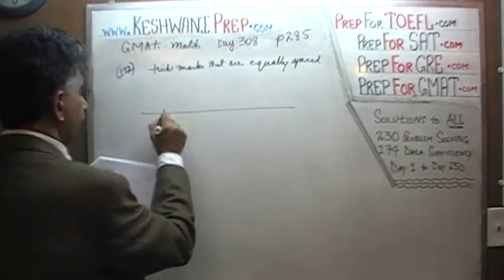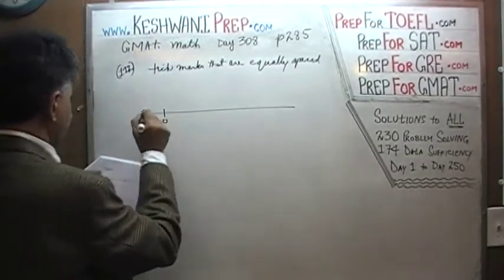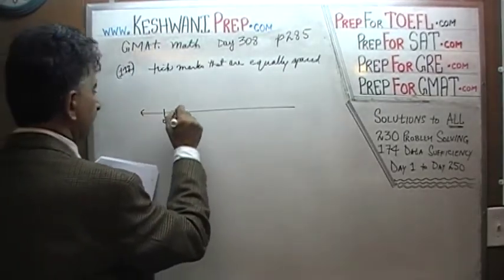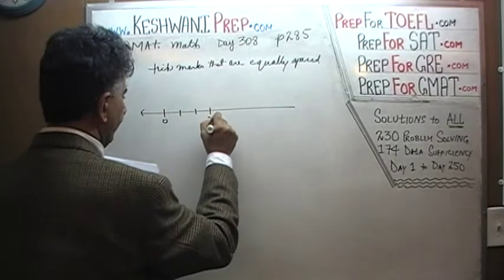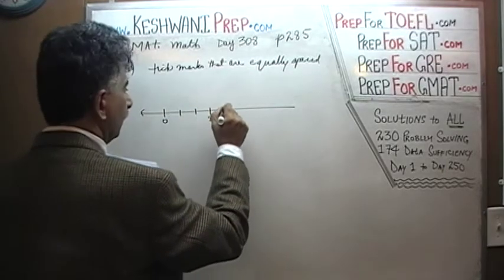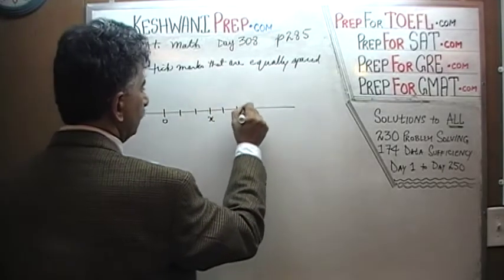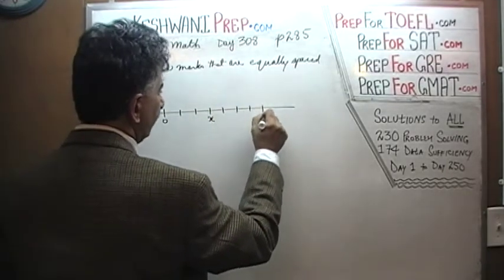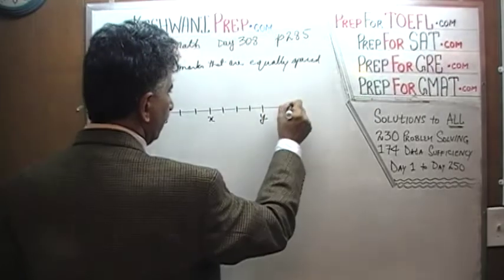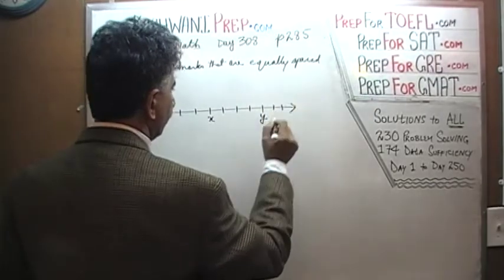Here is our zero, and then at the third tick mark — one, two, three — this is our x. And then we go one, two, three, four more tick marks and this is our y, and it just goes on.